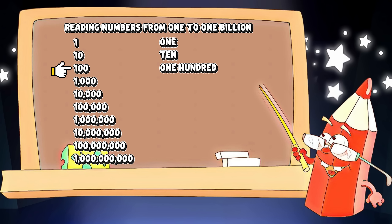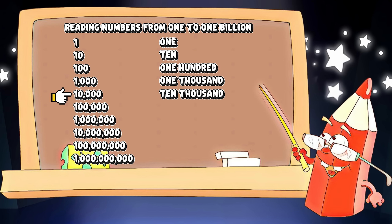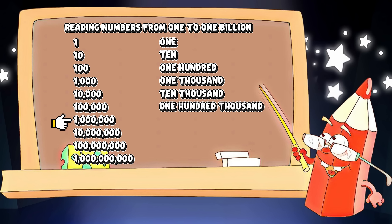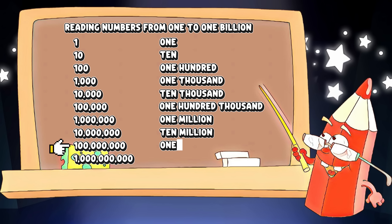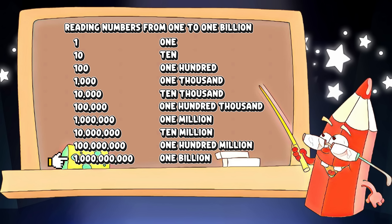One hundred, one thousand, ten thousand, one hundred thousand, one million, ten million, one hundred million, one billion. How about let's try to count the zeros of the following numbers? In ten: one zero. One hundred: two zeros.